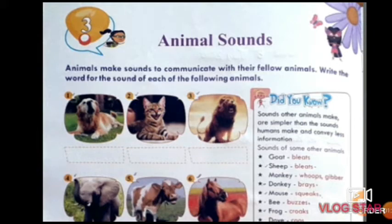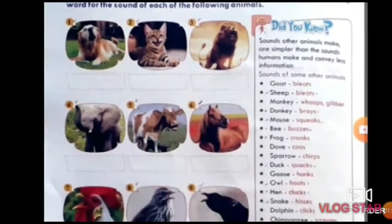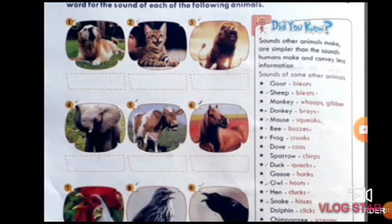Fourth is elephant. For elephant we write: T-R-U-M-P-E-T. Trumpet. Fifth is cow. For cow we write: M-O-O. Moo.